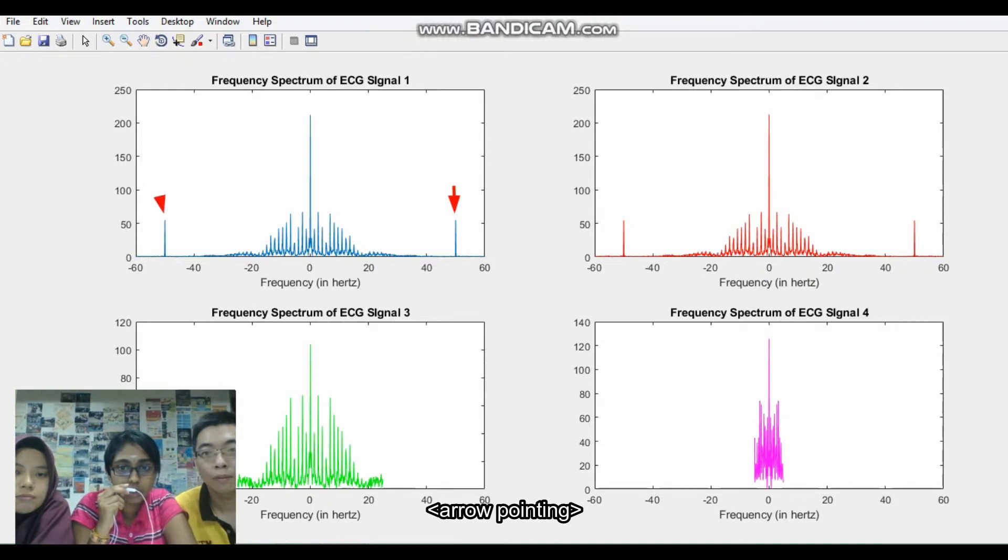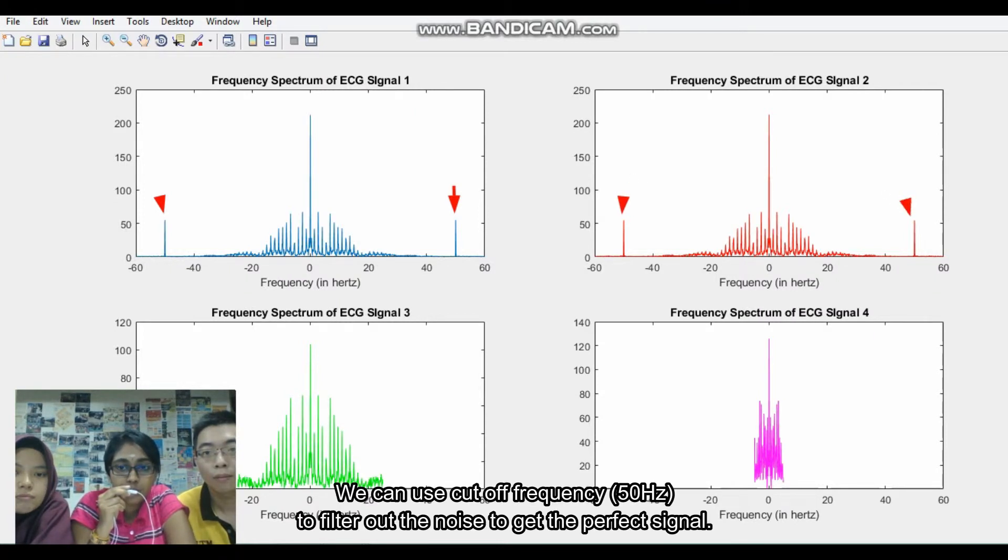For the ECG signal 2, the red color line is actually the noise, the unwanted signal. We can use a cutoff frequency 50 Hz to filter out the noise to get the perfect signal.